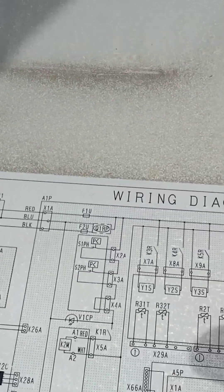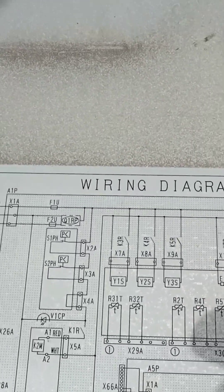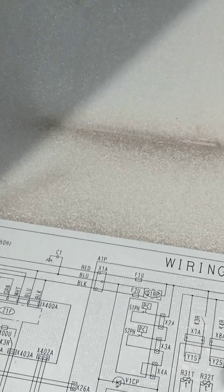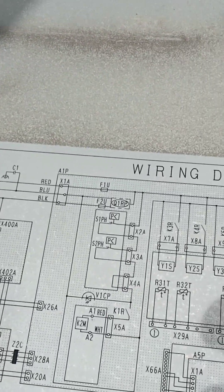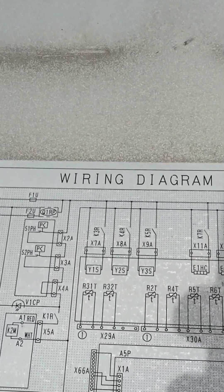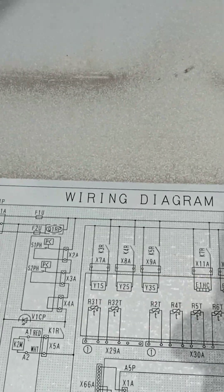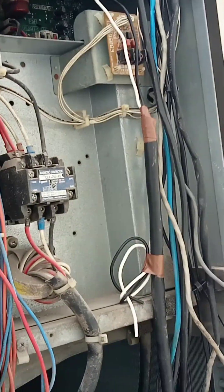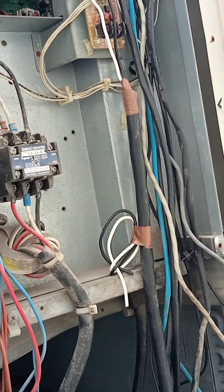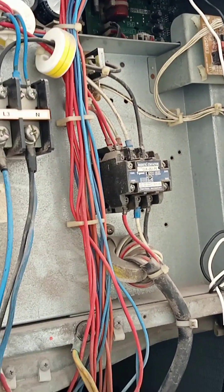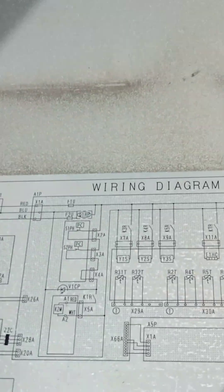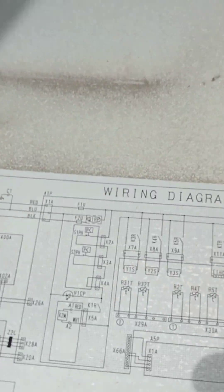One more thing — can we find the error code correctly? I'll show you how to correctly find the code. At the beginning, there is one cover in front and one cover behind. Every FCU has a wiring diagram. From this diagram you can find the error code for J3.